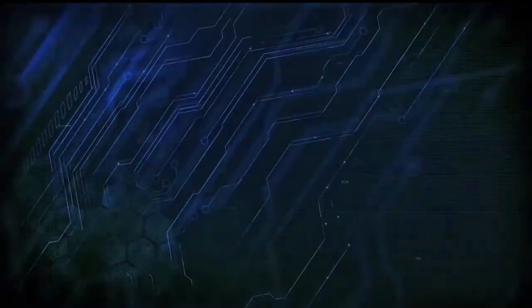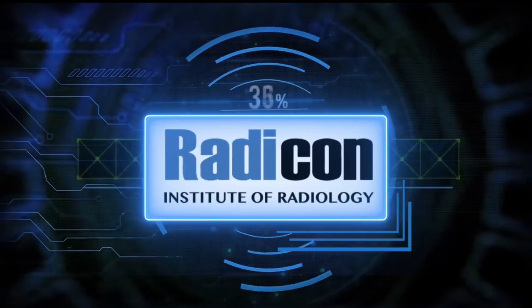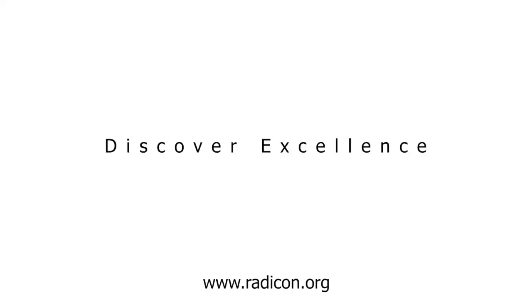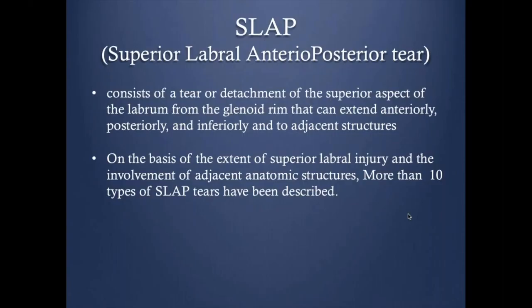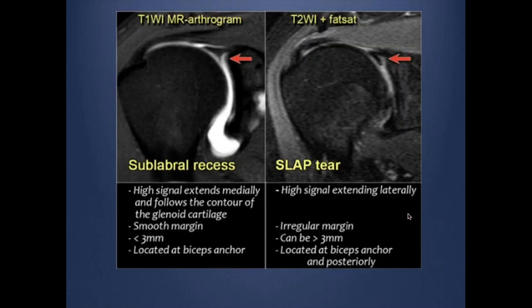You are watching Radicon. The last thing I'm going to talk about is the SLAP lesion. It is a tear or detachment of the superior aspect of the labrum that can extend anteriorly, posteriorly, or inferiorly. On the basis of the extension and morphology of the tear, more than 10 types of SLAP lesion have been described in the literature. I'm just going to talk about the four main types.